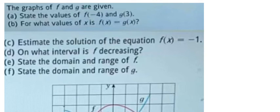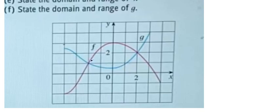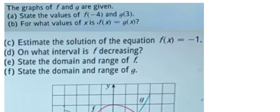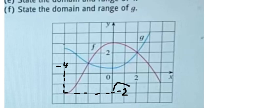We need to find f of negative four and g of three. For the first one, f of negative four — the location of negative four is here. We put this value and we see that this point is about negative two, so f of negative four equals negative two.